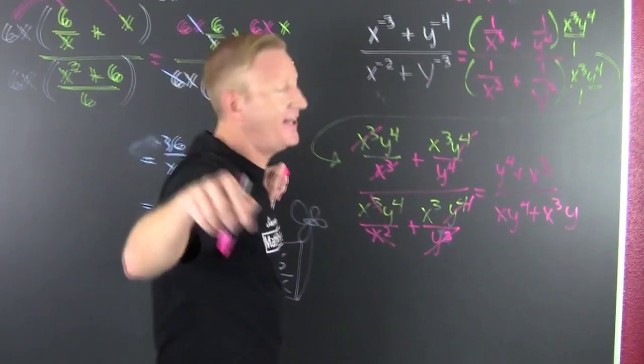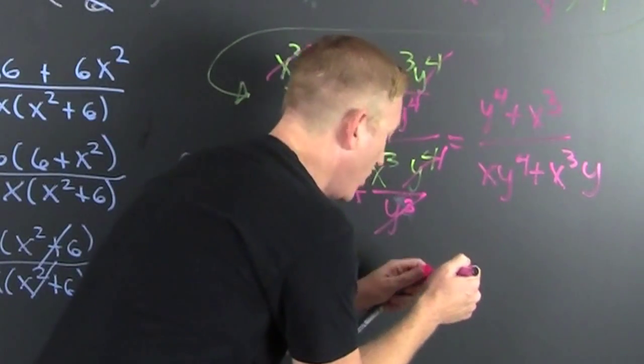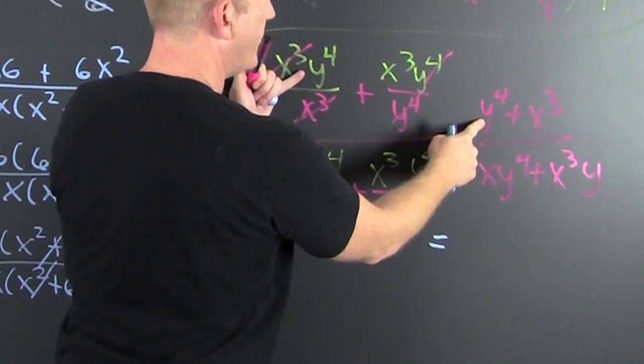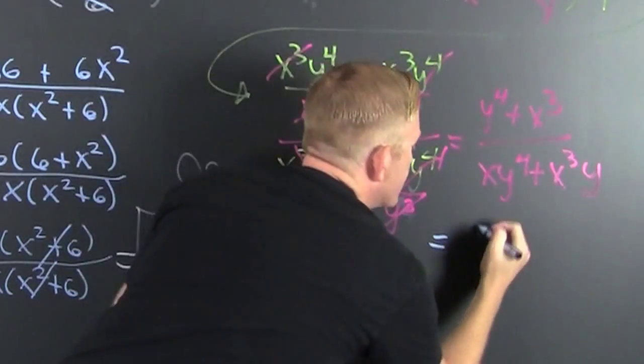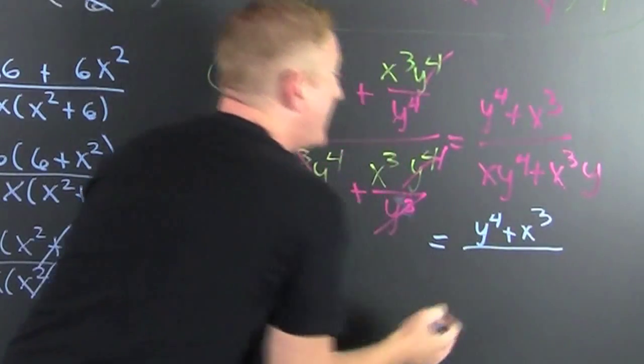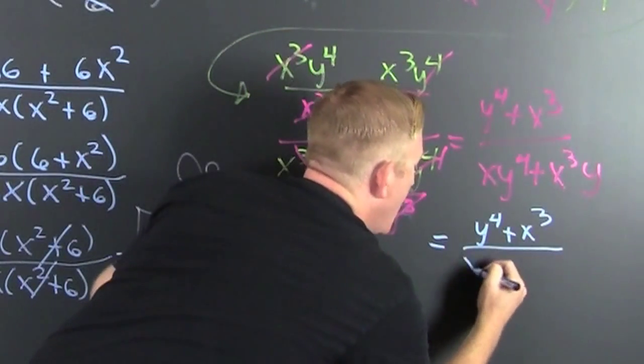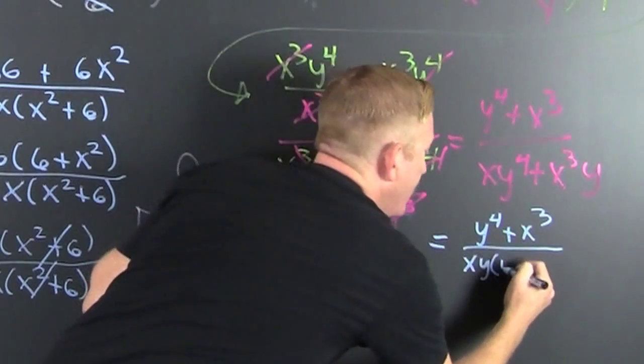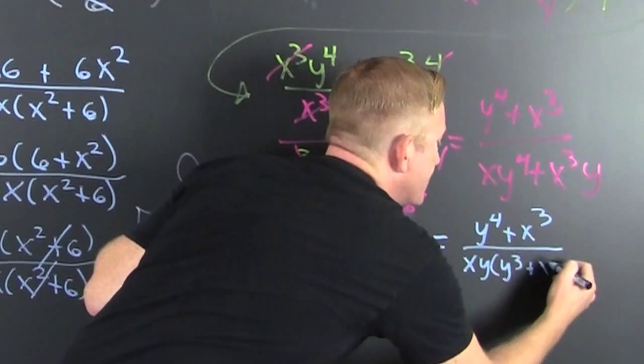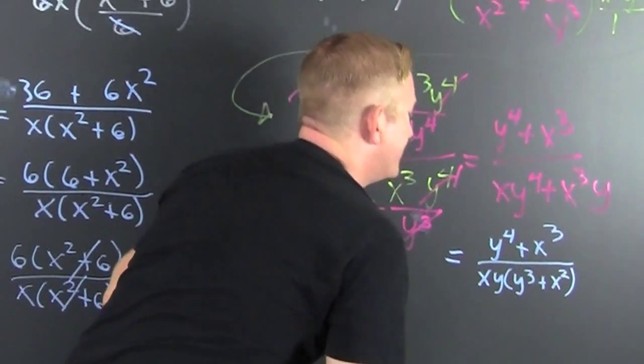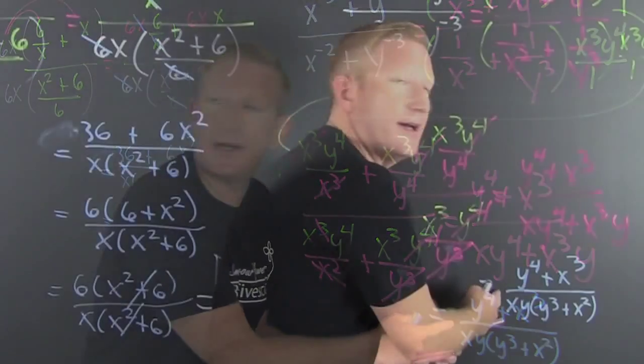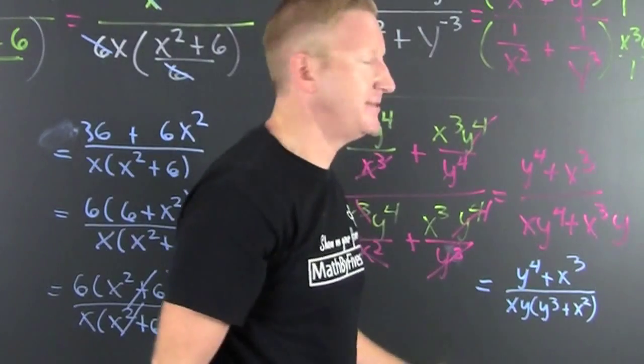I have y to the 4th plus x to the 3rd over an x y to the 4th plus x to the 3rd y. Look at that, I've got a common factor. So then that's y to the 4th plus x to the 3rd over down there. I had that common factor. I'm gonna pull out an x y and then left on the inside I have a y to the 3rd plus x squared.